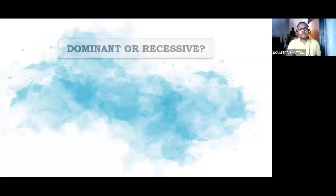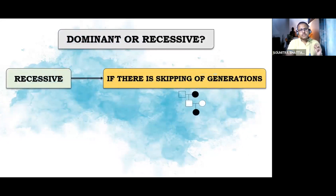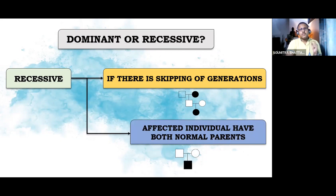We will first address the question of whether the pedigree is dominant or recessive. To decide if the pedigree is recessive in nature, we have to check whether the trait is skipping any generations. If it is skipping generations, certainly the pedigree will be recessive in nature. That means the affected individual will have a normal parent. If this kind of scenario is present, then the given pedigree is a recessive type.